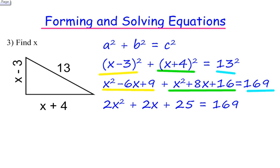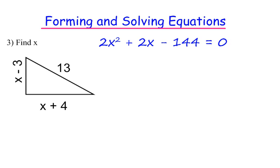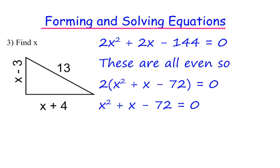Let's make that equal to 0. So take 169 off both sides, and we have 2x squared plus 2x minus 144 equals 0. So now we have to try and solve that. We can either factorize, or we can use the formula, or we can complete the square. All of the terms are even, so I can take a factor of 2 out, giving me 2 bracket x squared plus x minus 72 equals 0.